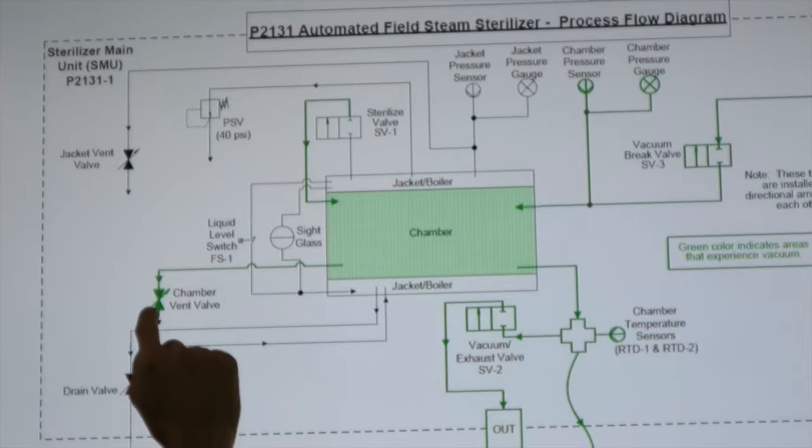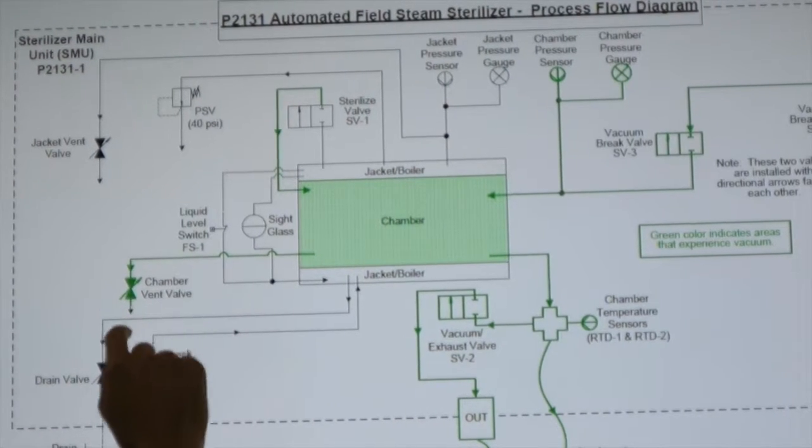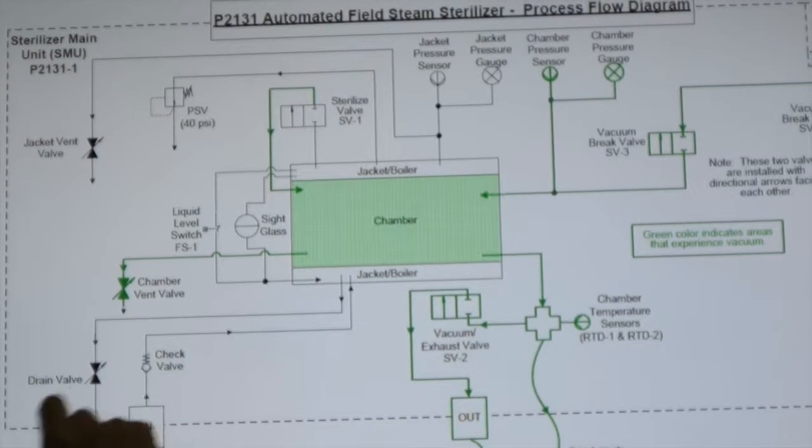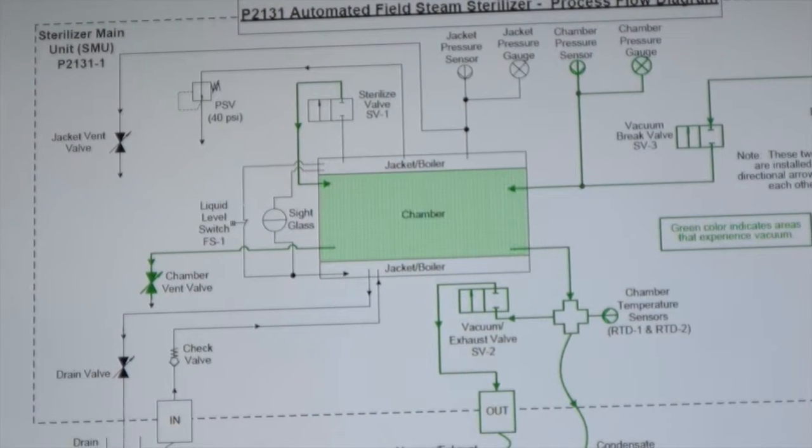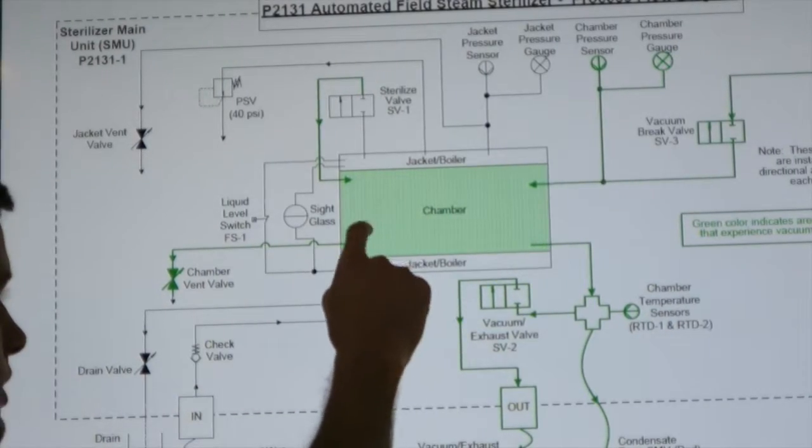So you can go to this process flow diagram and you can read all the components that experience vacuum. So if we start here on the left, we can see the chamber vent valve experiences vacuum. So that's that manual vent valve on the back. So you would know, oh, I've got to make sure it's closed, make sure all the fittings are tight.